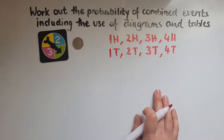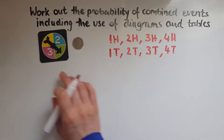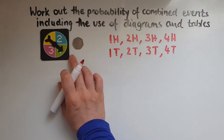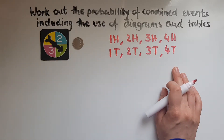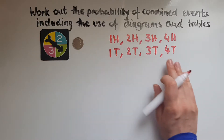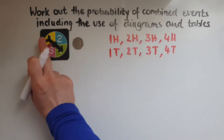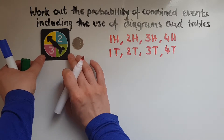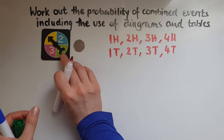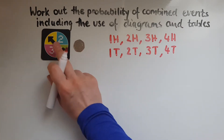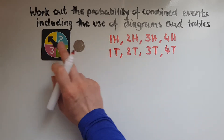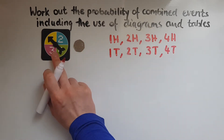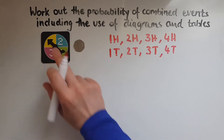So as you've just seen, we've looked at all the possible outcomes for both of these two objects. What we call this is a listing — and in fact it's a systematic listing, because we looked at each outcome for the spinner and then the possibilities for the coin. So: one and head, one and tail; two and head, two and tail; three and head, three and tail; four and head, four and tail. That's what we call systematic listing.